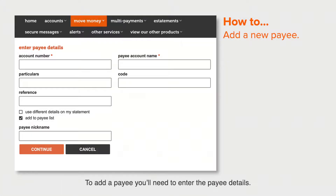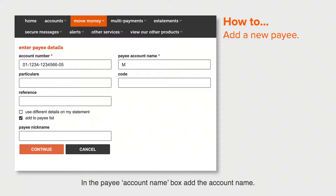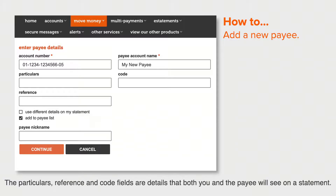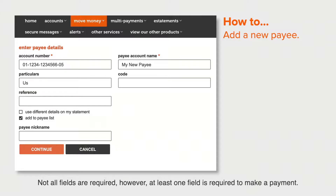To add a payee, you'll need to enter the payee details. In the account number box, add the account number. In the payee account name box, add the account name. The particulars, reference, and code fields are details that both you and the payee will see on a statement.